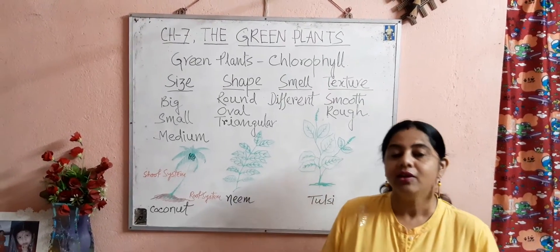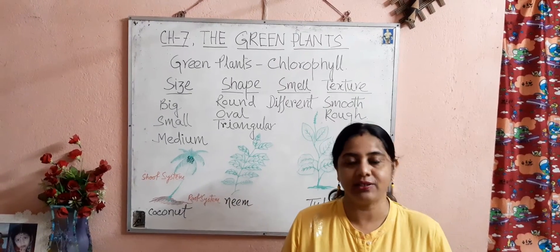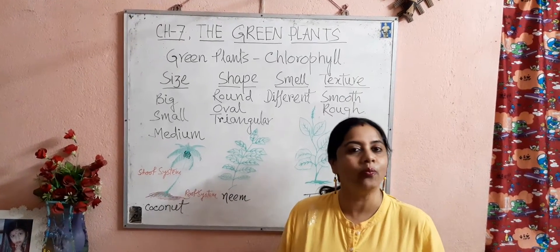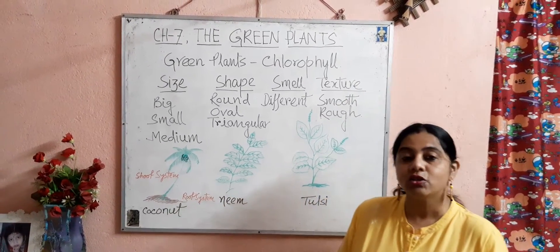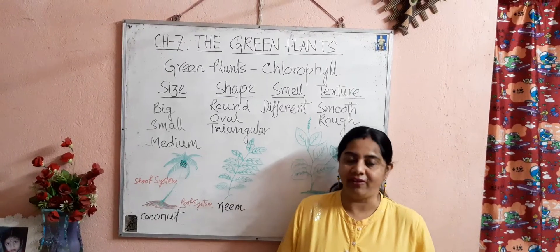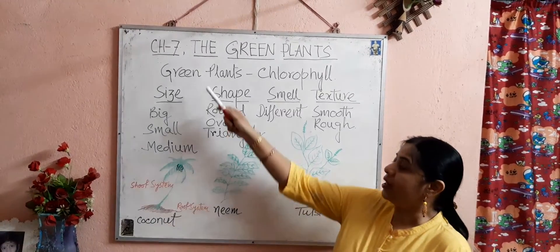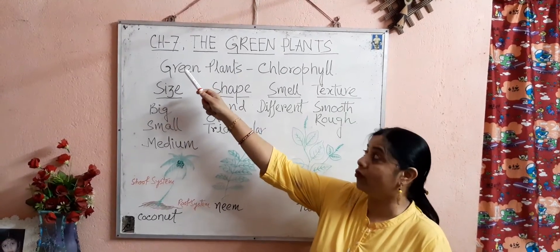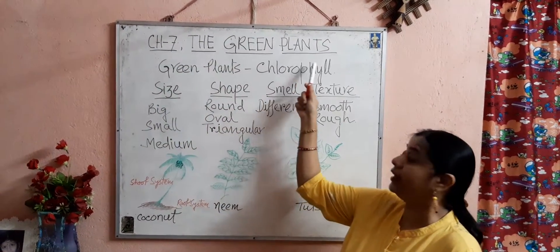Hello students, welcome back to the science class. Hope all of you are well at home. Today we are going to start a new chapter — that is Chapter 7 from your Science Horizon book. Chapter 7: The Green Plants.